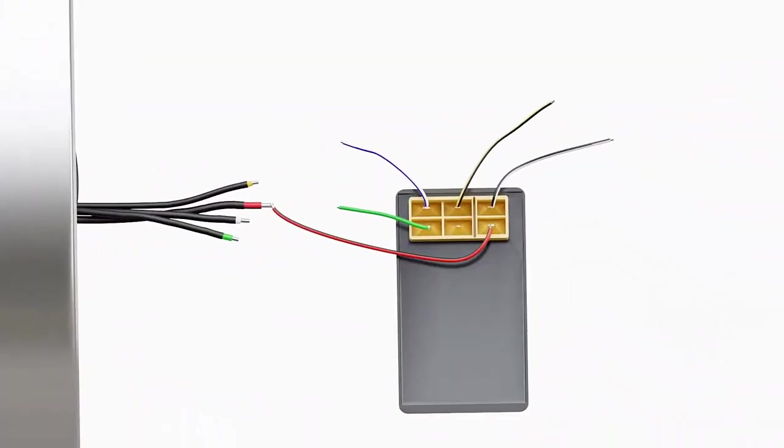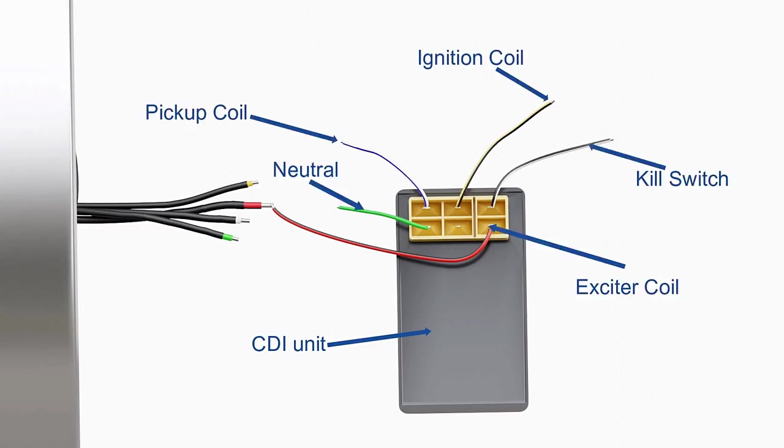This voltage is supplied to an electrical component known as the capacitive discharge ignition, or CDI unit. The connection for an AC-CDI is shown here.